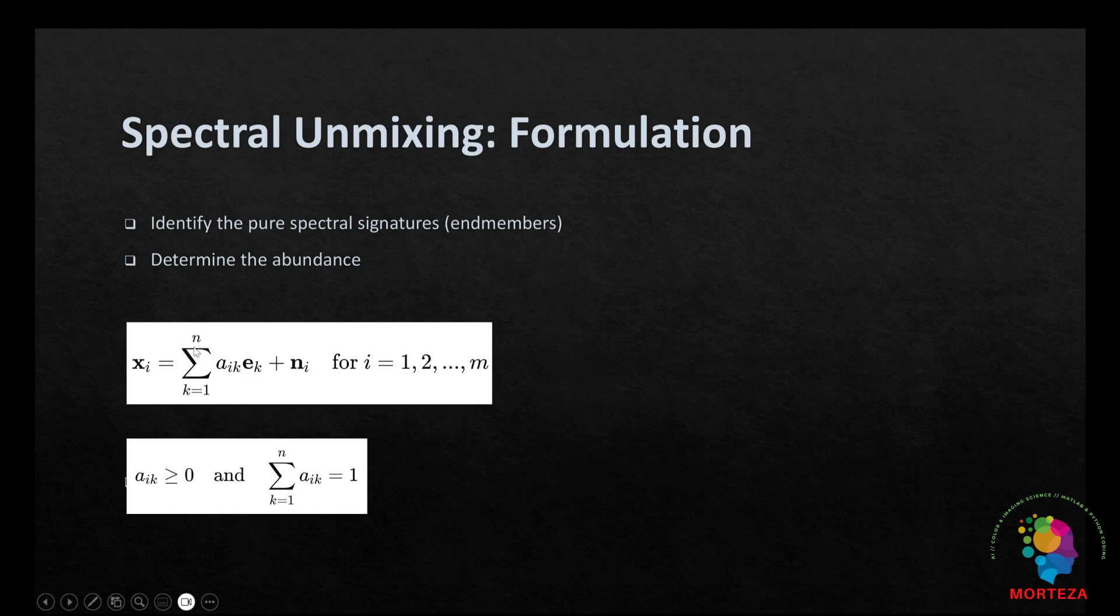And N is the number of endmembers here. N_i or N sub i is representing noise. N here shows the total number of pixels.